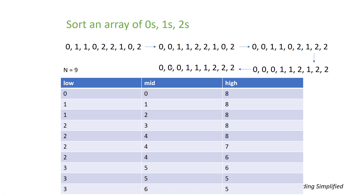One approach is to use three count variables: count0, count1, and count2. We iterate through the array and whenever we hit a value we increase the corresponding count. So we hit 0, increase count0; hit 1, increase count1, and so on. At the end we might have count0 as 3, count1 as 3, count2 as 3. Then we just place them back into the array accordingly — first count0 zeros, then count1 ones, then count2 twos. This is the easy way.